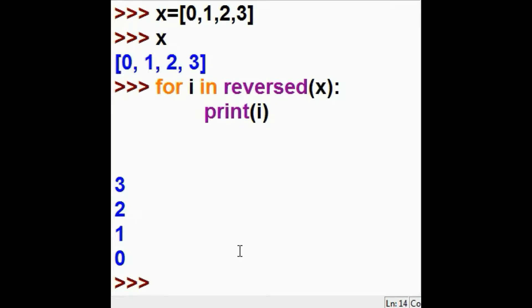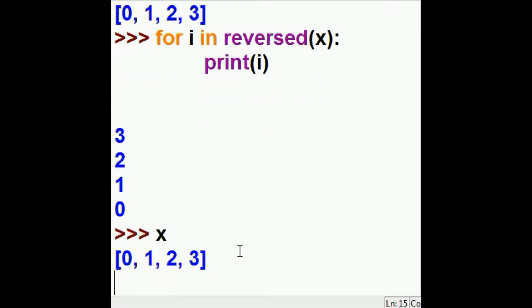What if I really want another list? X is equal to 0, 1, 2, 3. What if we keyed in Y equals list. I want you to do me a favor, make a list out of something. What would you like me to make a list out of? Well, I'd like you to take the reversed of X, the reversed of X, and make a list out of that.